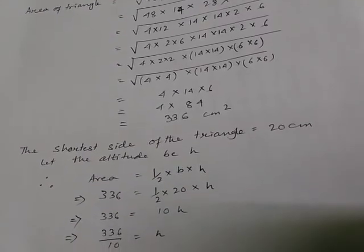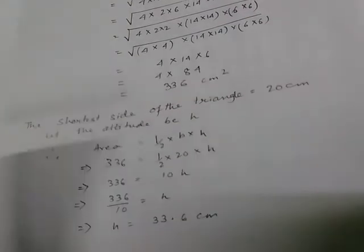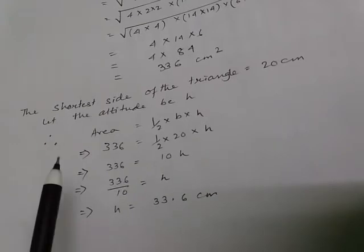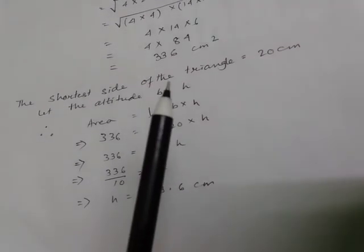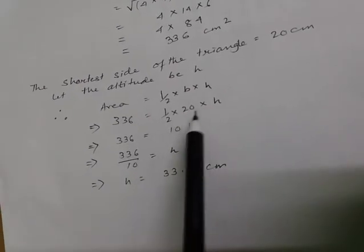Now, according to the question, the shortest side of the triangle is 20 centimeter. So, let the altitude be H. Now, area equal to half into base into height.